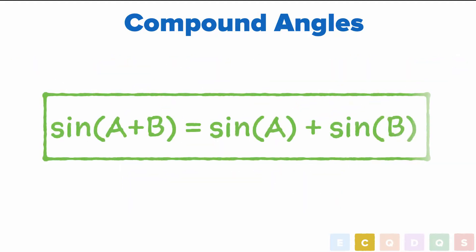Sadly, it's not as easy as sine of a plus b equals sine a plus sine b. That's a big no-no. Sine, cos, and tan each have two formulas, or identities each, and it's pretty important that you know them. So let's take a look.